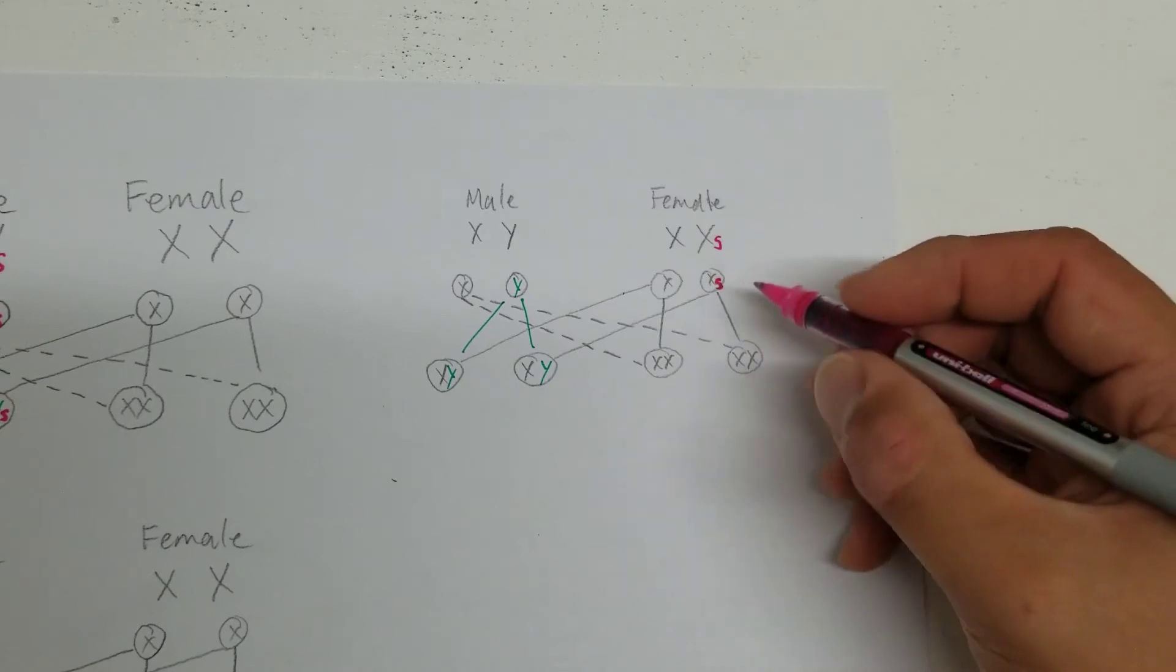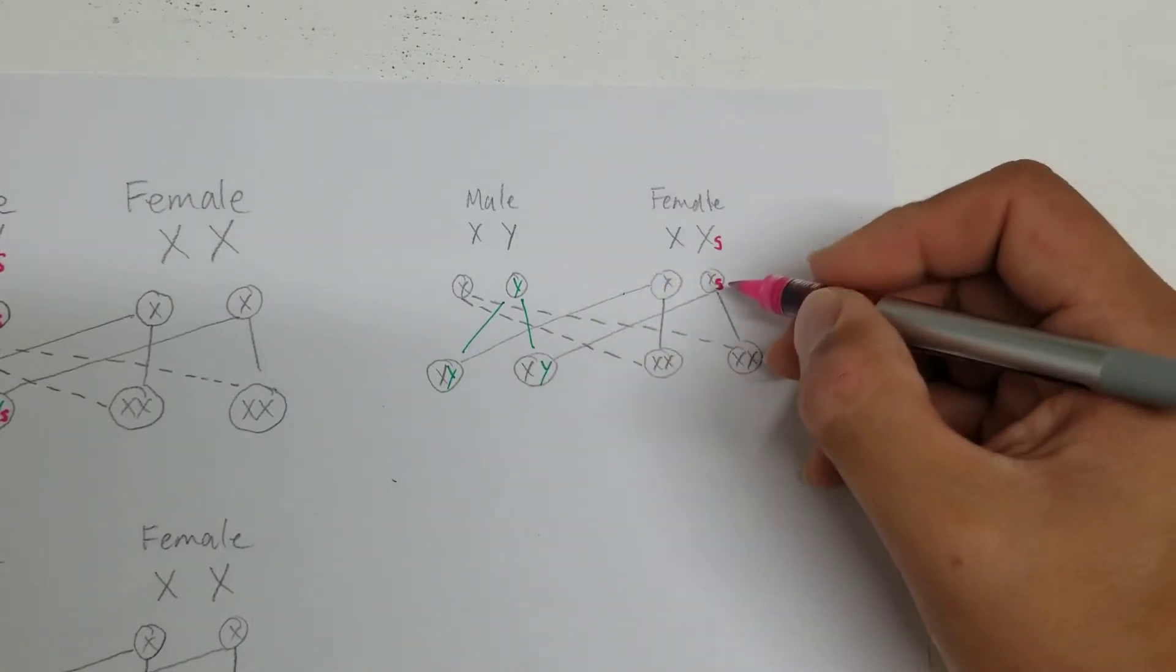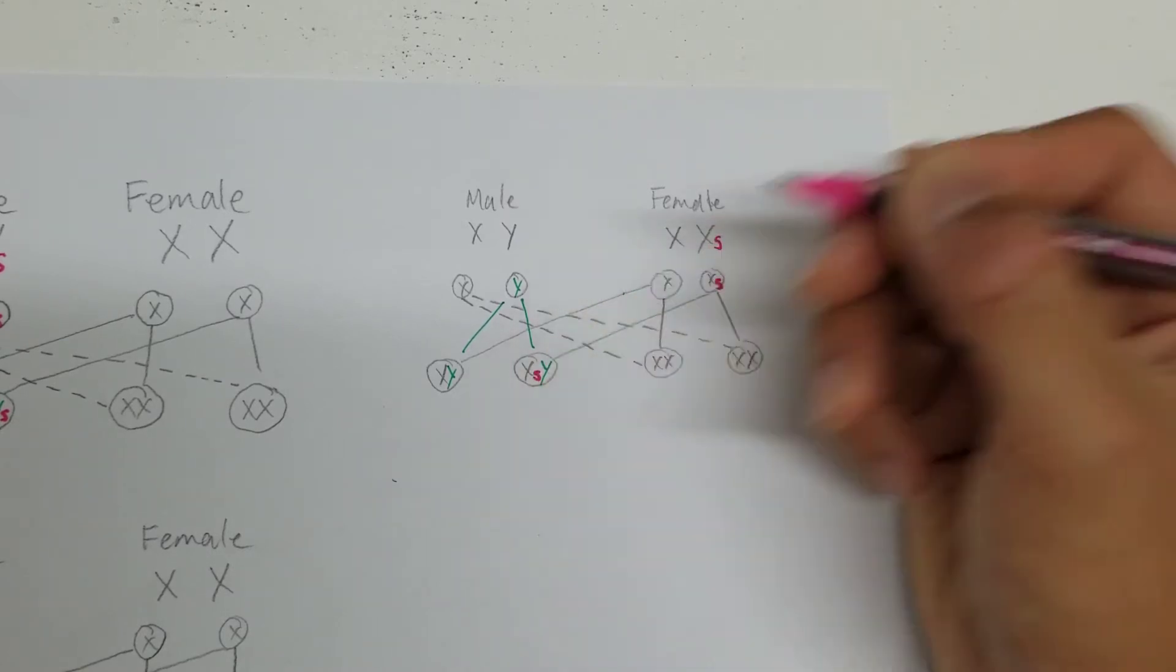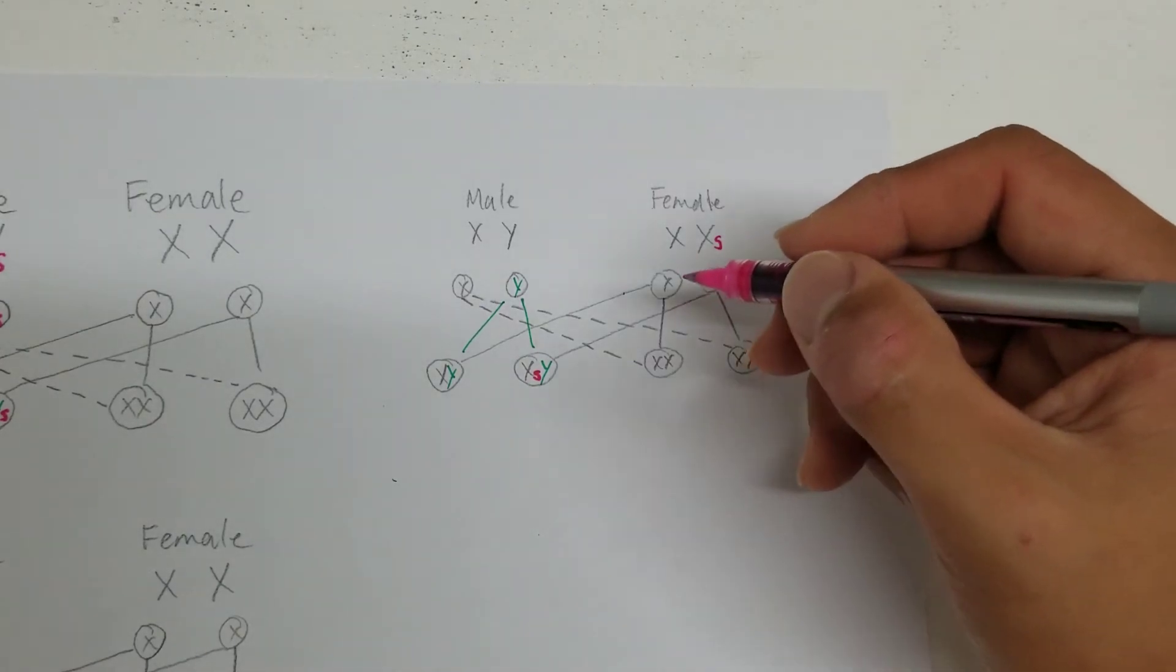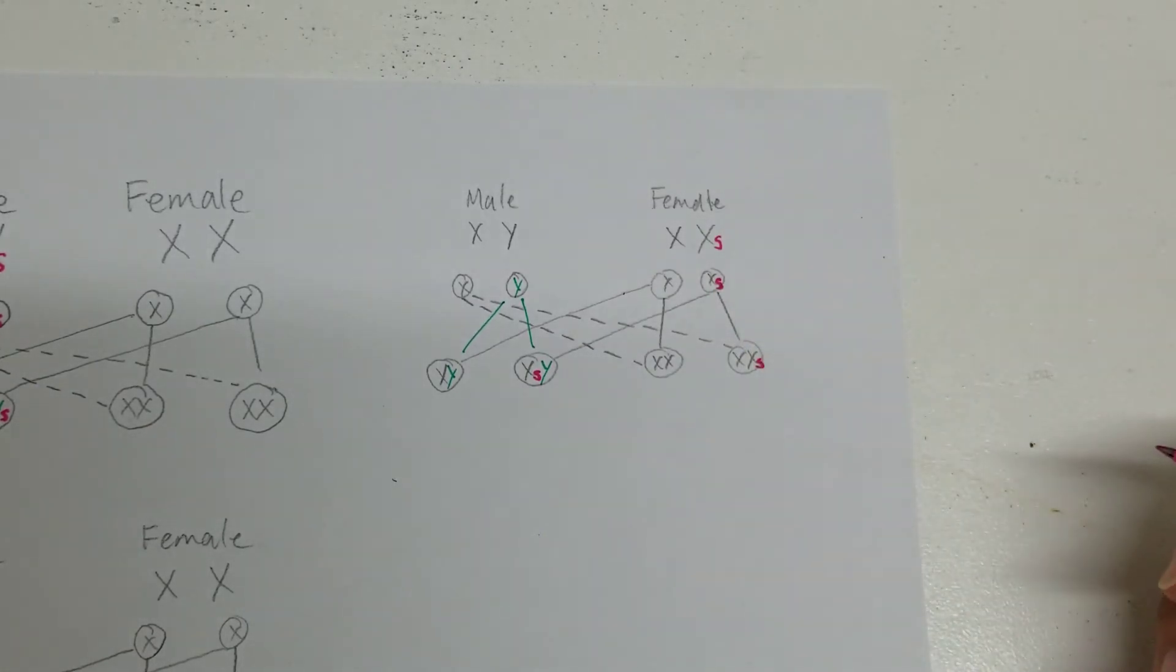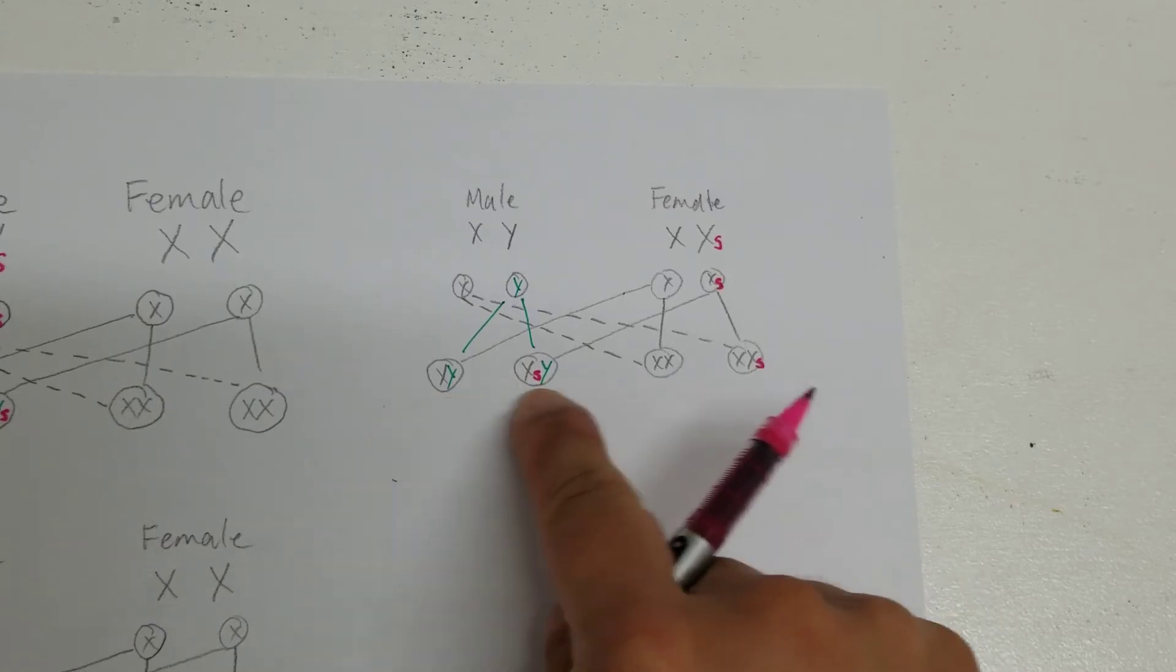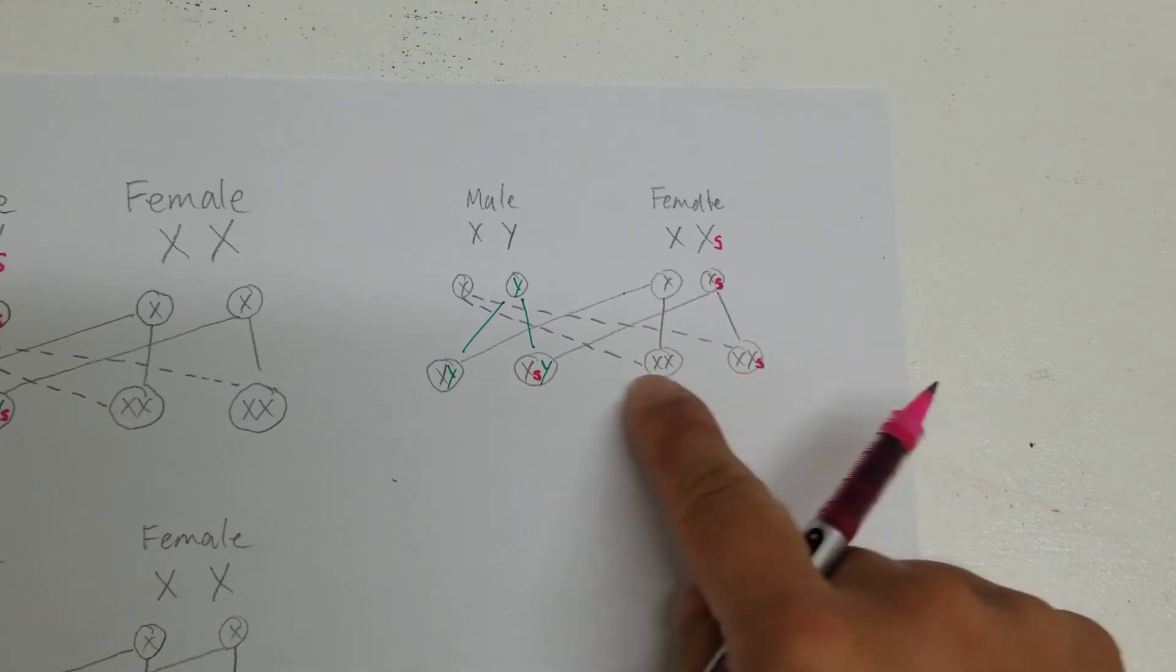So if you can see here now, if it combines with say the Y sperm from the male, that's going to be a coral glow. If it combines with the X from the male, that's also going to be a coral glow. So in this case it's going to produce 50% male hatchlings with the coral glow gene, 50% female hatchlings with the coral glow gene.